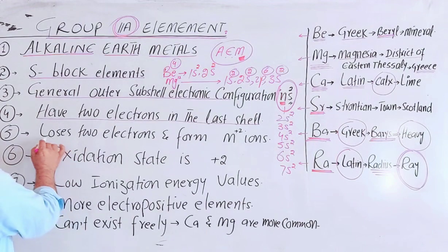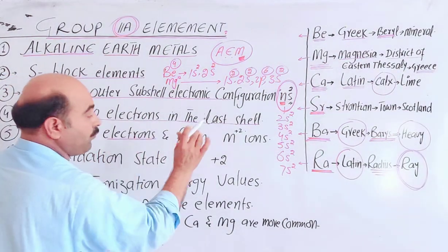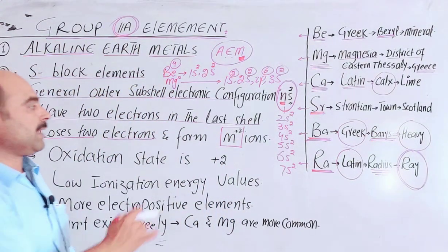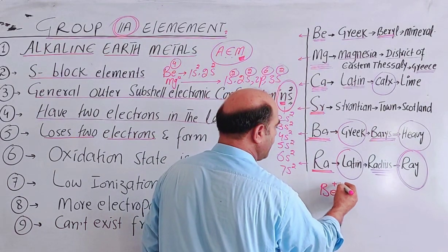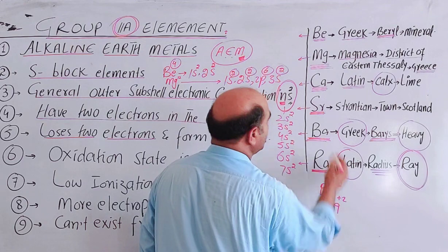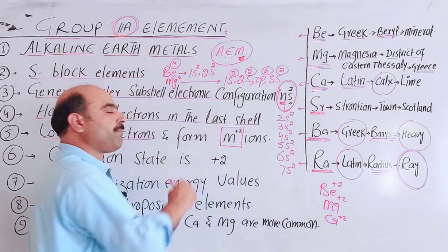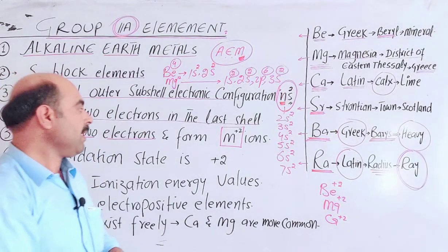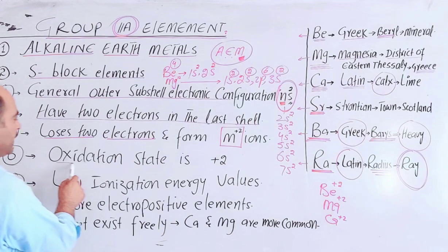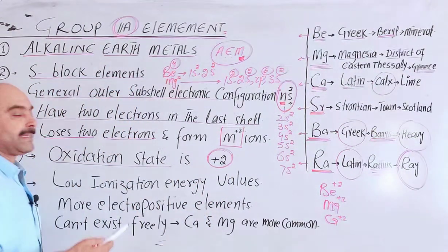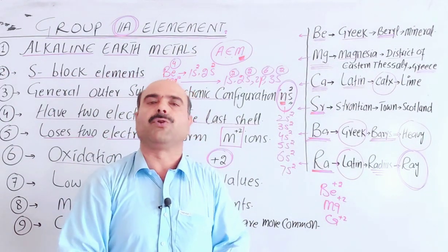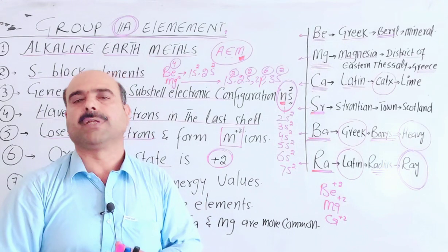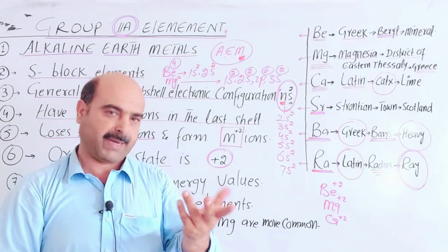The group number indicates the total number of electrons in the last shell. Since the group number is second A, they have two electrons in the last shell. These two electrons are lost to attain the nearest noble gas electronic configuration and become stable. These elements lose two electrons and form M+2 ions. Their oxidation state is +2. What is oxidation state? The apparent charge that an atom has in a molecule or compound.